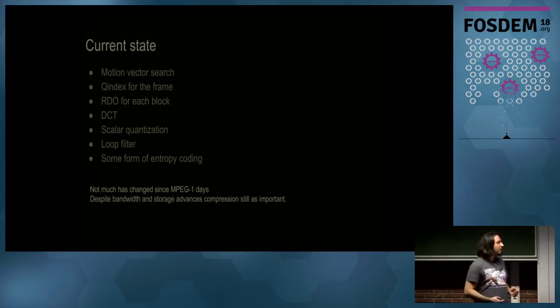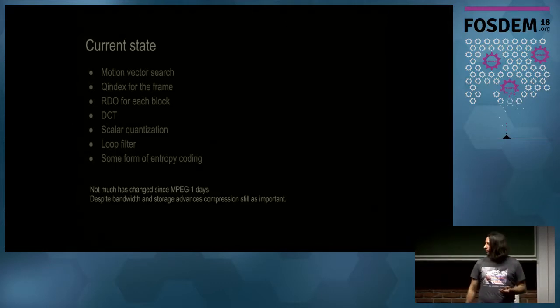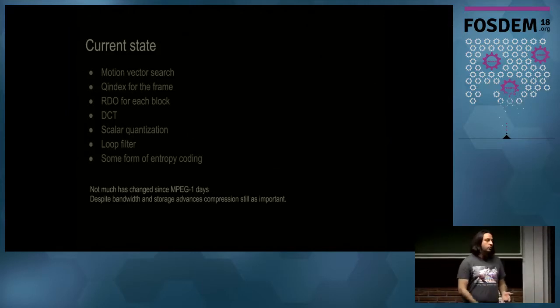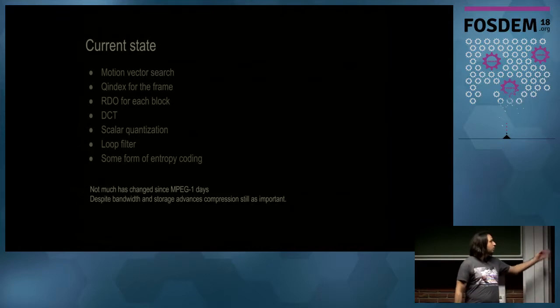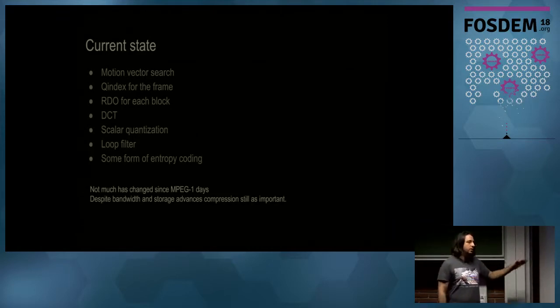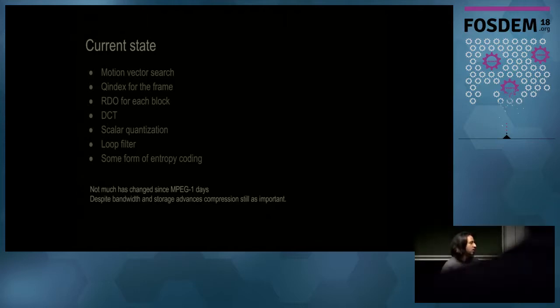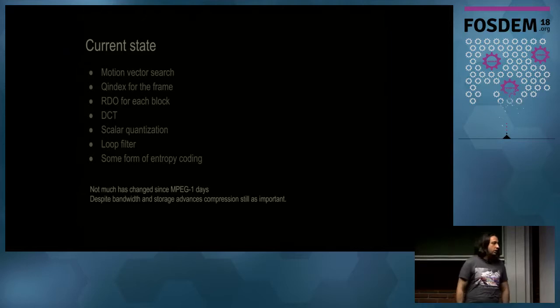We're at a point now where there's a standard set of coding tools used by pretty much all video compression codecs. You have motion vector search, a Q-index for the frame as part of the rate control system, a mode search for each block, DCT, scalar quantization, loop filter, and entropy coding. Most of these tools have been present in MPEG codecs since the 90s. MPEG showed us a way that is guaranteed to pretty much work — implement this and you can build a new codec that will work just as well as any other MPEG codec.